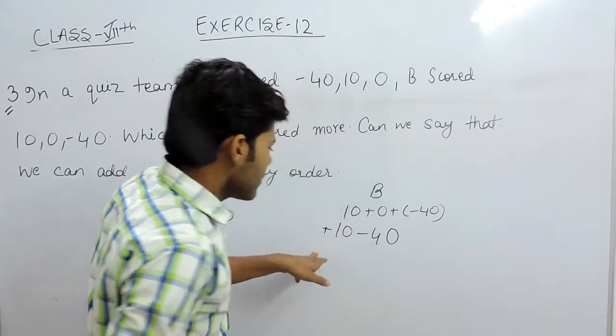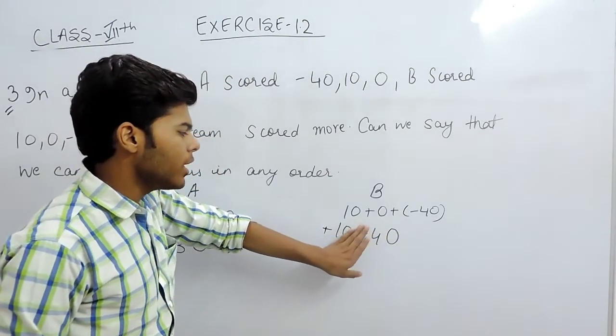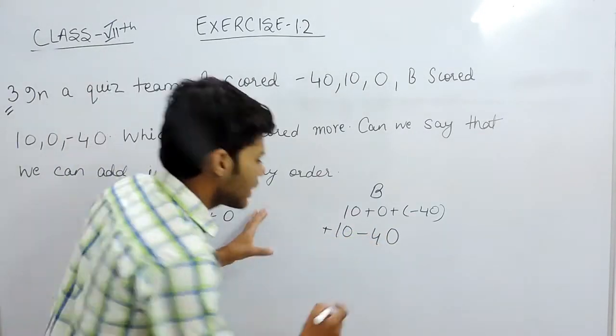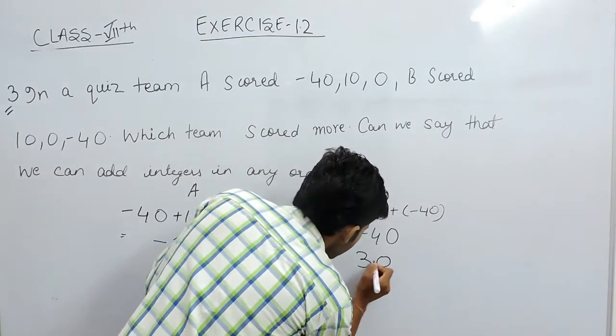This will be plus or minus, so first of all we subtract the terms normally. 40 minus 10 is 30 and sign of the greater term is minus.